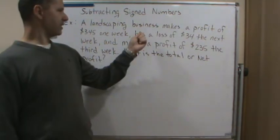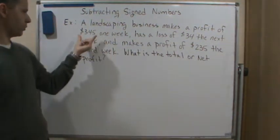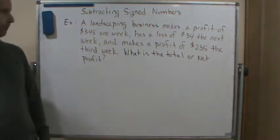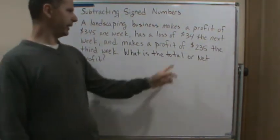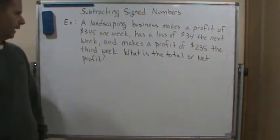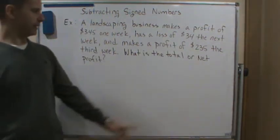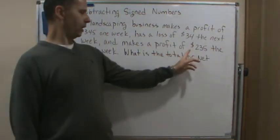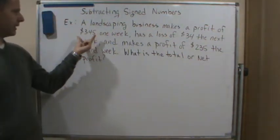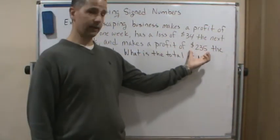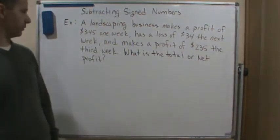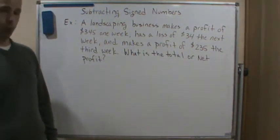In this example, the landscaping company makes a profit of $345 the first week. The next week it has a loss of $34. Then the third week it makes a profit of $235. So the weeks with profit are positive values and the weeks with a loss are negative values.